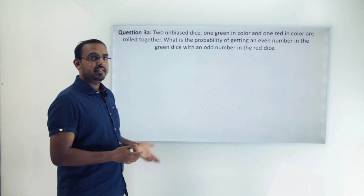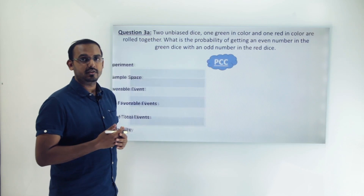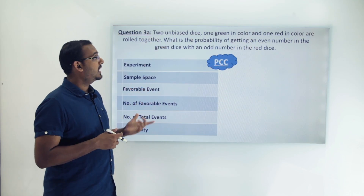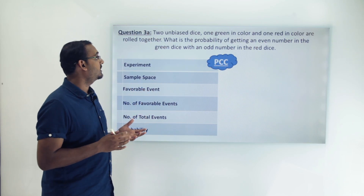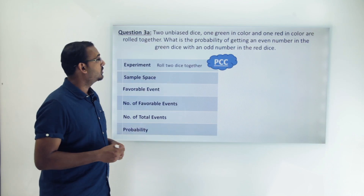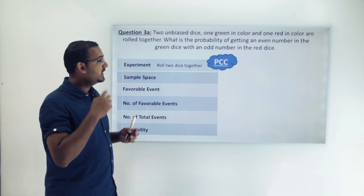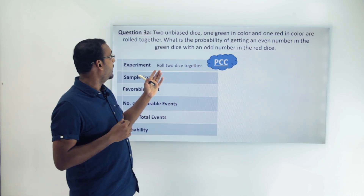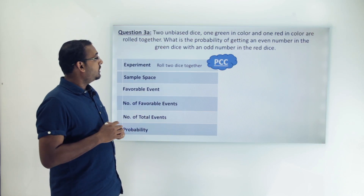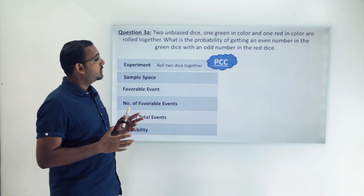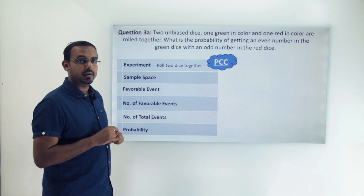So now let's draw the PCC for this question and try to analyze it. The first thing we'll look at is what is the experiment that we are performing — we are rolling two unbiased dice together. Now let's try and figure out the sample space for this experiment.